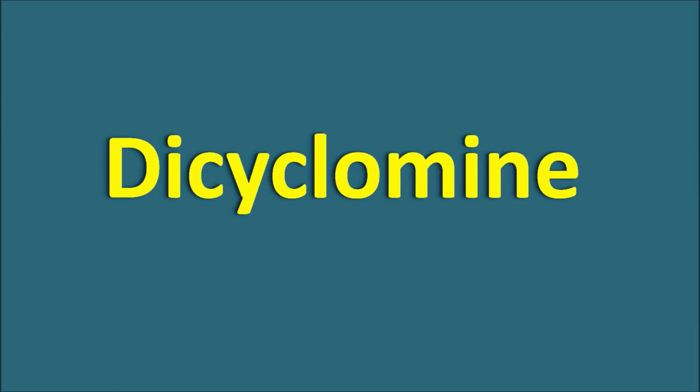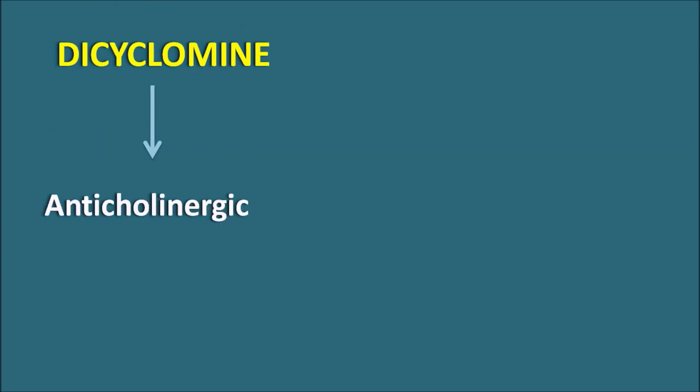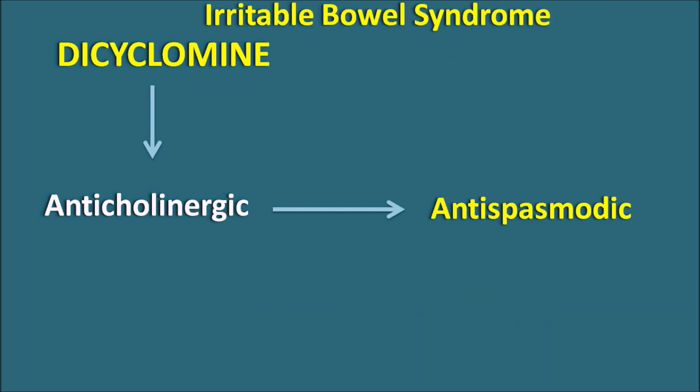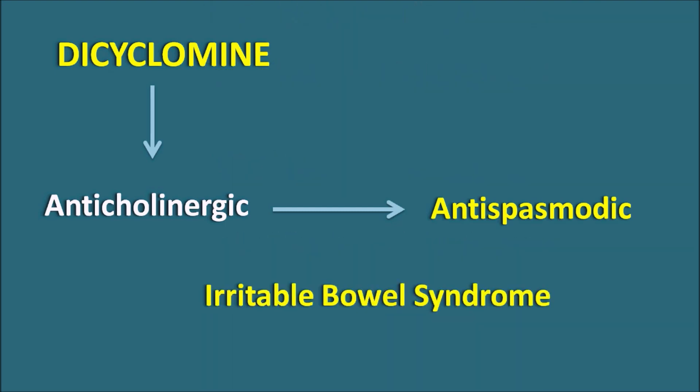Hi everyone. Today in this video let us discuss about Dicyclamine — how this drug acts as antispasmodic. Dicyclamine is one of the anticholinergic agents; because of block of cholinergic receptors it produces muscle relaxation, so it acts as antispasmodic. Particularly in the treatment of irritable bowel syndrome, IBS, Dicyclamine can be used.